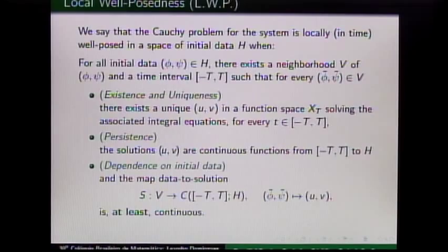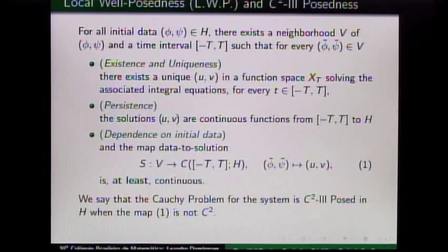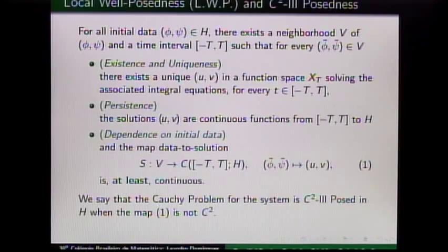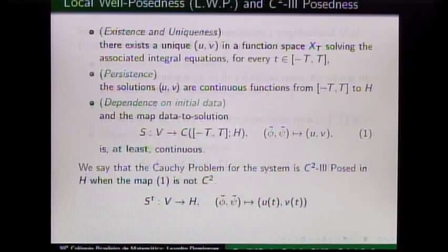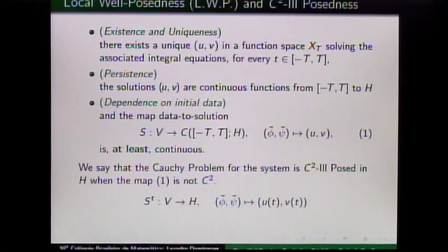It's natural to say that the Cauchy problem is C2 ill-posed at some regularity or for some space H when the map from data to solution is not C2. As far as we know, the first C2 ill-posedness result was obtained by Nikolai Tzvetkov in 1999, improving the C3 ill-posedness result obtained by Burgan for the KdV equation. Tzvetkov proved something slightly stronger: for every non-zero T in the time interval, the flow map from data to solution is not C2. This is stronger because if this map is C2, then the flow map is C2.